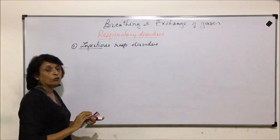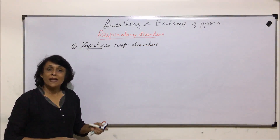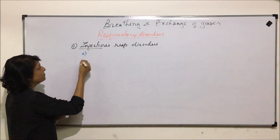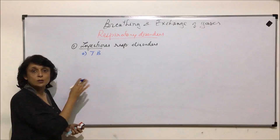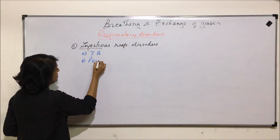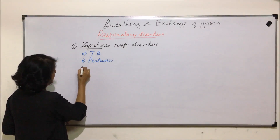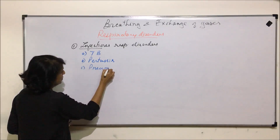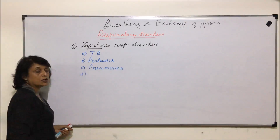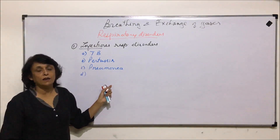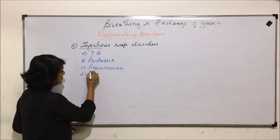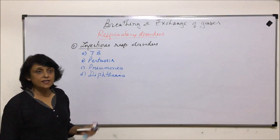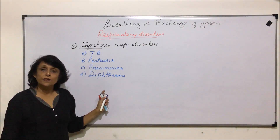Infectious respiratory disorders include all diseases caused by some kind of pathogen, which could be a bacterium or a virus. Examples include tuberculosis (TB), pleurisy, pneumonia, and diphtheria. These are common infectious respiratory diseases, and their details are discussed in the chapter on human health and diseases.